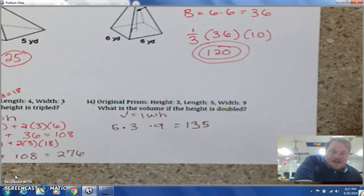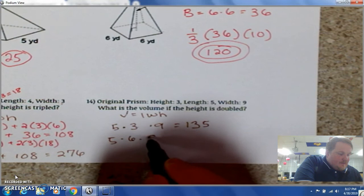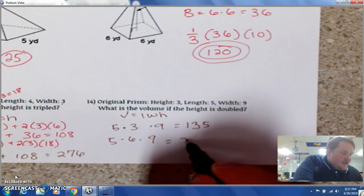If you double the height, so instead of the height being 3, it's now 6, and do the same thing, it's 270. And what's happened here is it's doubled.